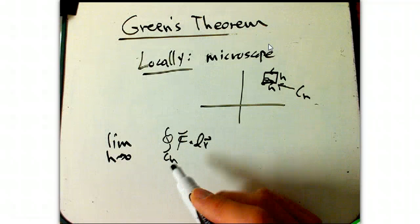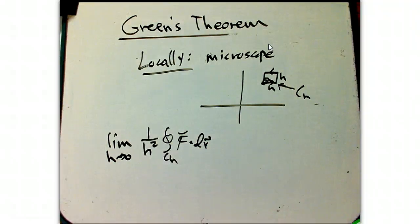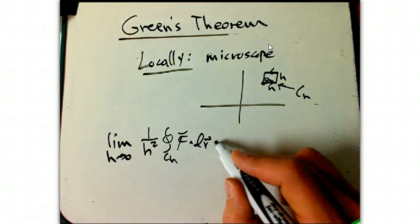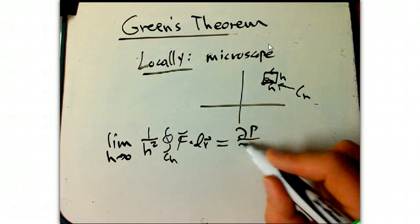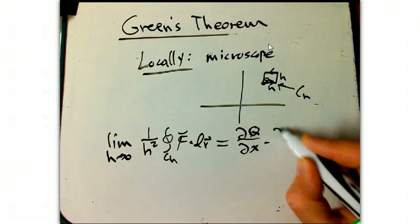But what we discovered, and this fits in with what I was just saying, is that the circulation per unit area, we divided by the area h squared of the box, this limit didn't go to zero, and what we discovered, that was exactly dq/dx minus dp/dy.